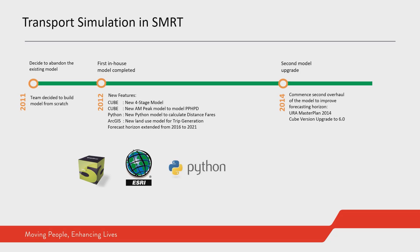In 2012, the first in-house model was out. With the new model came new features: we built a new four-stage model, a morning peak assignment model to model PPHPD, and a distance fare model to estimate revenue. We also incorporated new tools like Python as well as GIS into the planning process.